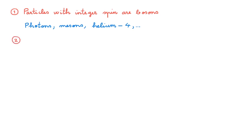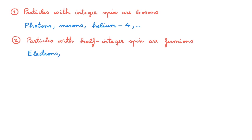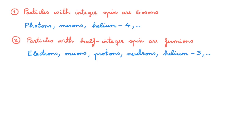Second, particles with half-integer spin are fermions. Examples include elementary particles like electrons, protons, or muons, and non-elementary particles like protons or neutrons, each made of three quarks, or helium-3, another isotope of helium made of two protons, one neutron, and two electrons. For elementary particles, their spin is an intrinsic defining property. For non-elementary particles, we need to combine the spins of the elementary particles making them up in the usual manner to decide what the total spin is.